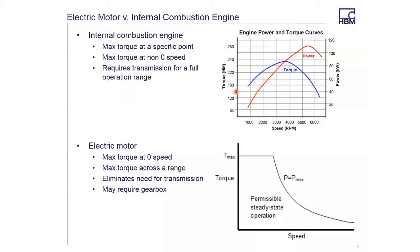What we see from this curve is that we can't produce any torque at zero speed in the internal combustion engine, and that max torque happens at a very specific point. Similarly, maximum power happens at a different specific point.